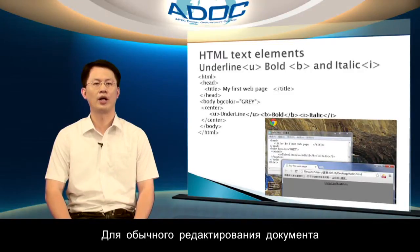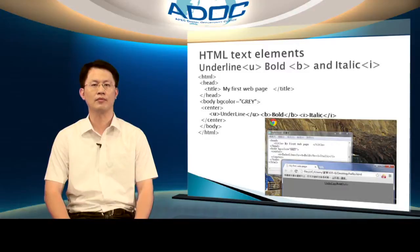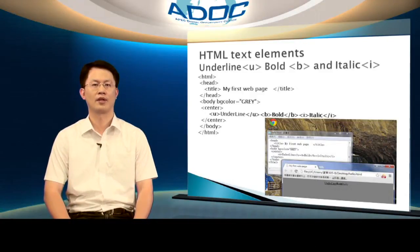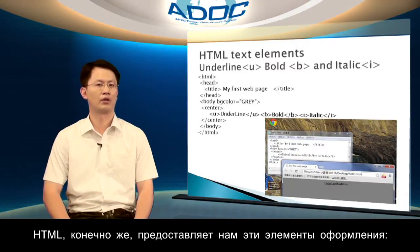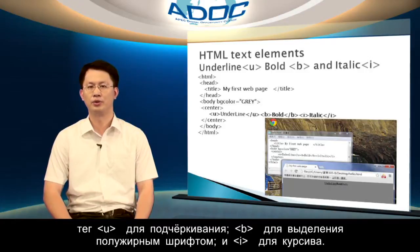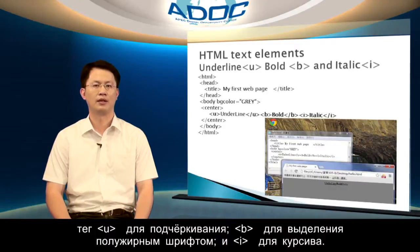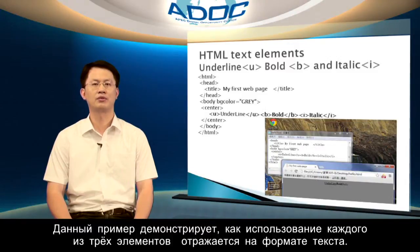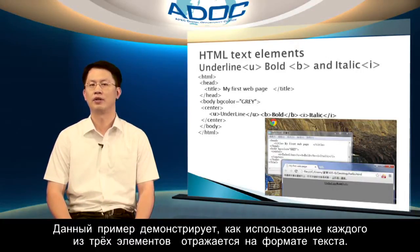For our regular document editing, we usually need to set our text bold, underlined, and italic. HTML of course also provides us this kind of format elements. The element U for underlined, B for bold, and I for italic. The example shows three different elements that take different effects for the text formats.